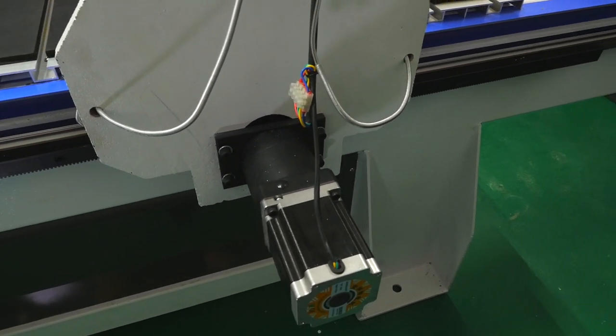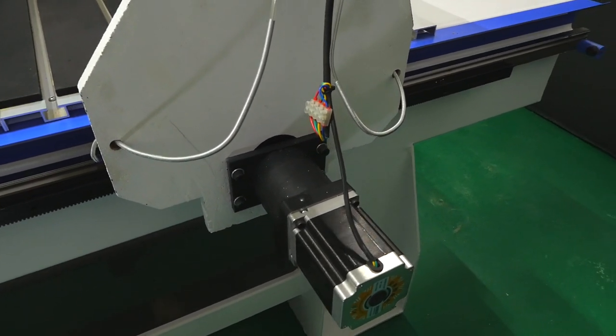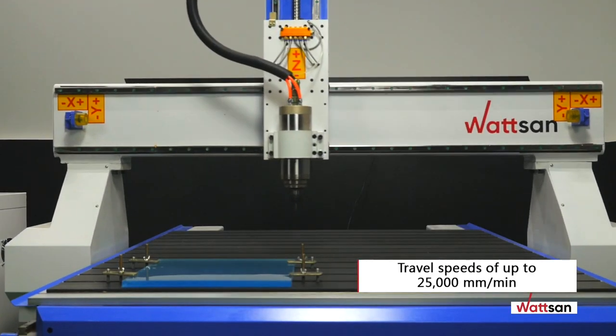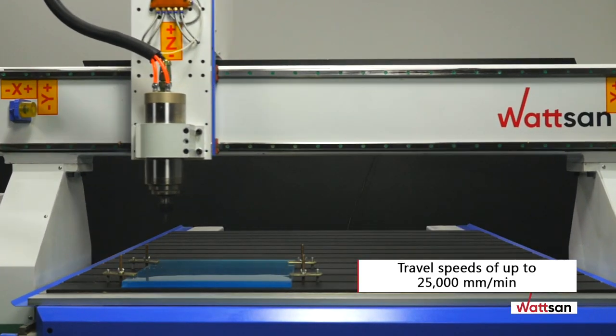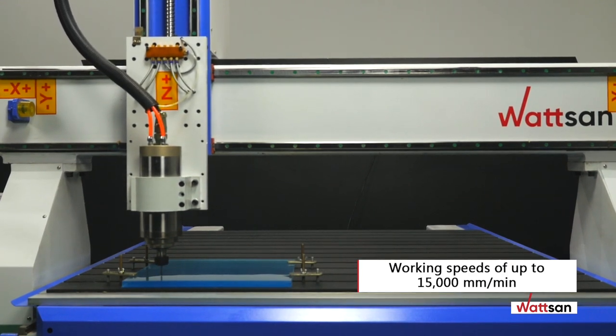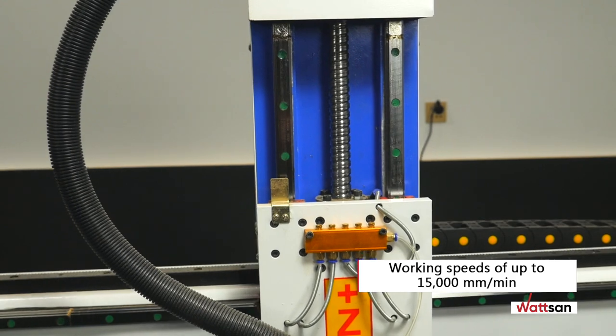On request, our millings can be equipped with hybrid steppers or servo motors. The maximum axle speed is 25,000 millimeters per minute. The maximum working speed is 15,000 millimeters per minute. Positioning accuracy is 0.05 millimeters.